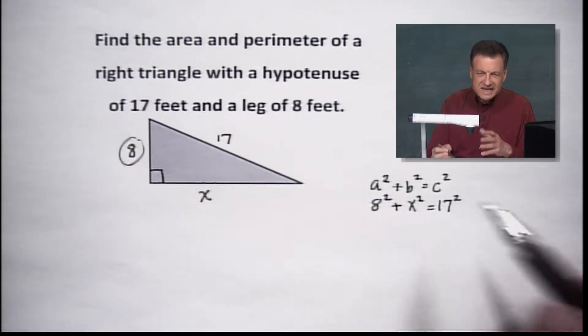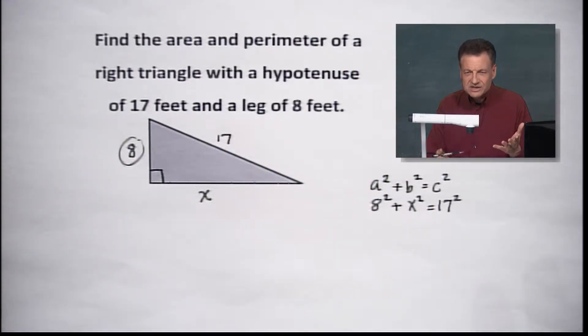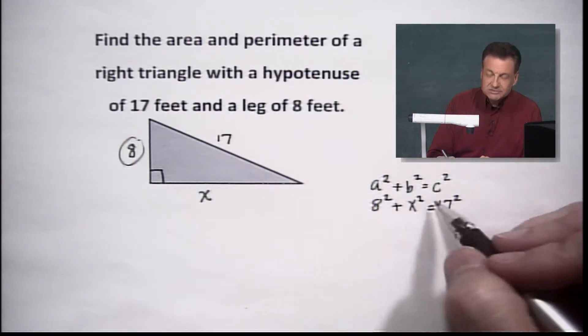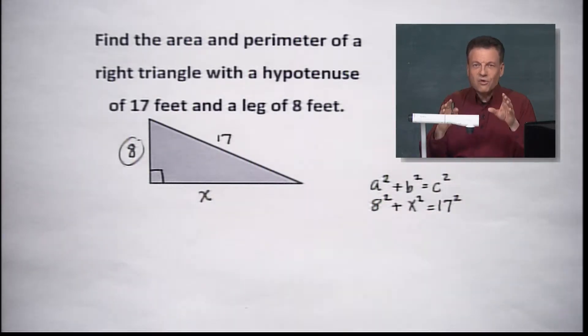Every time you run this 8 squared and X squared and 17 squared, X squared is going to always be the same thing, and X is going to always equal the same thing. So let's go ahead and square them out. I gave you my little pro tip for learning your perfect squares and also learning your Pythagorean triples.